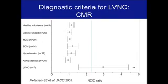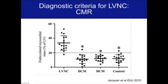We proposed cardiac MR diagnostic criteria in 2005, using a non-compaction to compaction ratio in excess of 2.3 when measured in diastole in long axis — either the four-chamber, three-chamber, or two-chamber view. This differentiated the group quite nicely. A similar study by Jacquier and colleagues confirmed these findings using a slightly different parameter: trabeculated myocardial mass as a percentage of LV mass in excess of 20% differentiated non-compaction from other forms of cardiomyopathy or healthy controls.